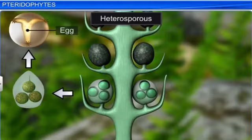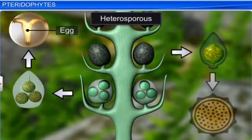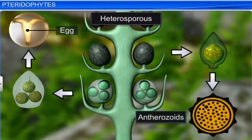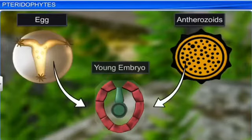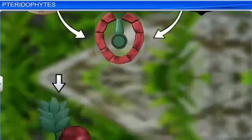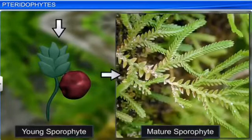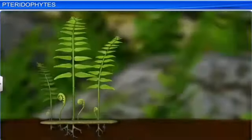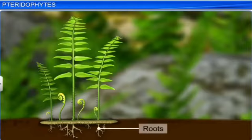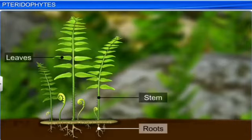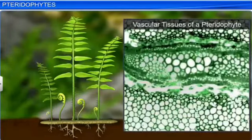This event is nothing but a precursor to the seed habit. Pteridophytes are one of the most major groups of plants. The egg and antherozoids undergo fertilization to give rise to a new embryo — a young embryo — which further forms the young sporophyte, which gets transformed into the mature sporophyte. There is a clear distinction of the roots, stems, and leaves in pteridophytes, with a proper arrangement of the vascular bundles.